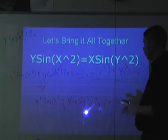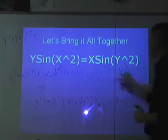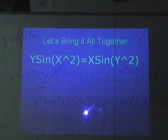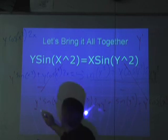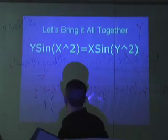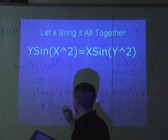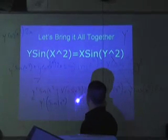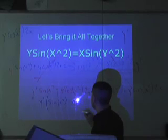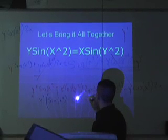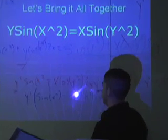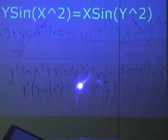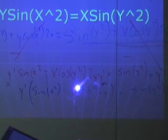Now that we have both y primes on the same side, we want to factor it out so we can solve for y prime. Using implicit differentiation, we factor: y prime times the quantity sine of x squared minus x cosine of y squared times 2y. That equals sine of y squared minus y cosine of x squared times 2x.